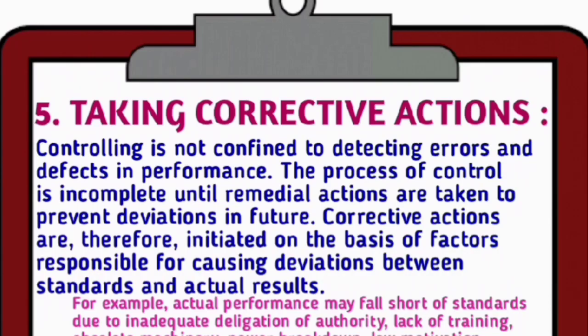Step 5: Taking Corrective Actions. Controlling is the last function of management, and accordingly, the last step is taking corrective actions. Controlling is not confined to detecting errors and defects in performance. The process of controlling is incomplete until remedial actions are taken to prevent deviation in future. Corrective actions are initiated on the basis of factors responsible for causing deviation between standard and actual results.